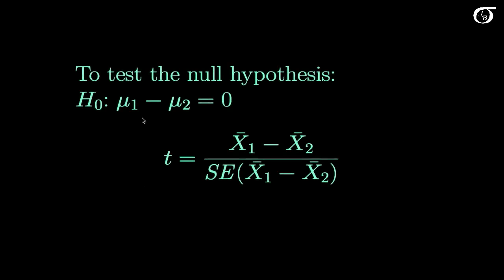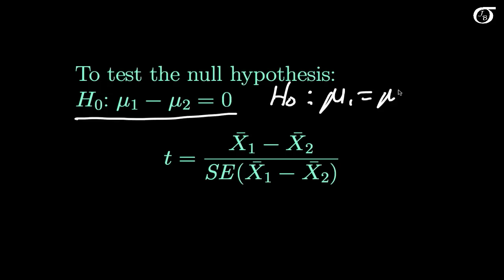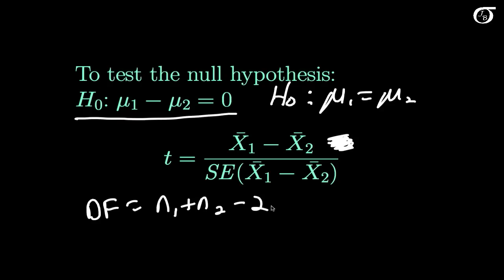We also frequently want to carry out the hypothesis test of the null hypothesis that the difference in the means equals 0 — equivalently, that the population means are equal. Our test statistic takes the usual structure: the estimator of the difference in population means, divided by the standard error, giving us a t with n1 plus n2 minus 2 degrees of freedom. We could test a different hypothesis such as mu1 minus mu2 equals 10, but testing equal means is by far the more common test.